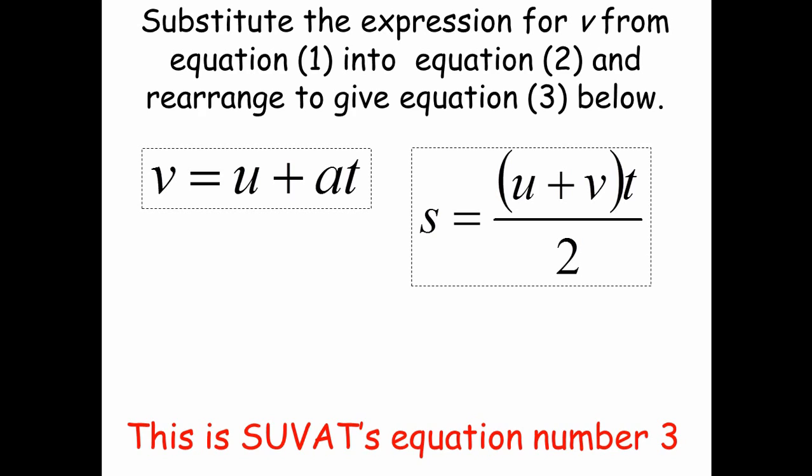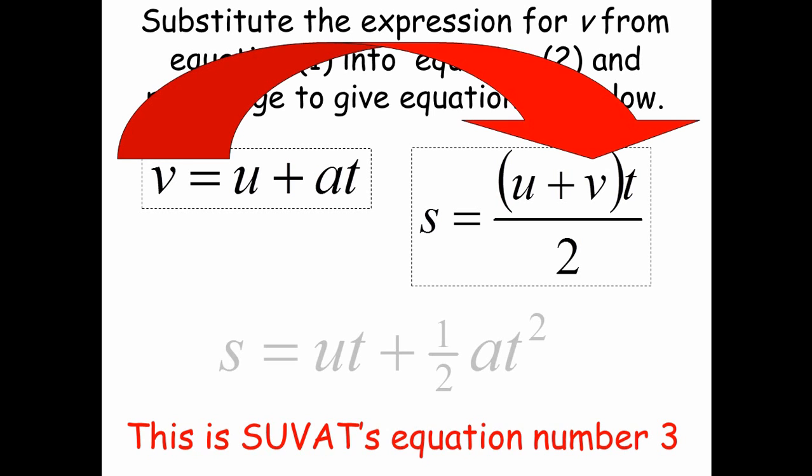Now, what we're going to do next is substitute the expression for v from equation one into equation two, and rearrange to give equation three below. So, we've got S equals ut plus half AT squared. This is going to be SUVAT's equation number three.